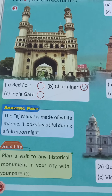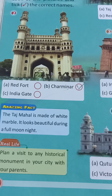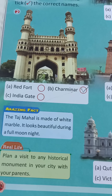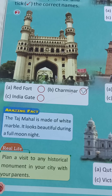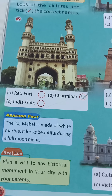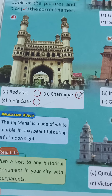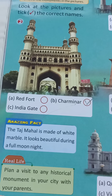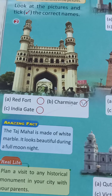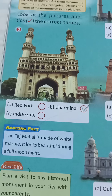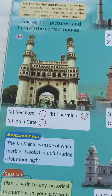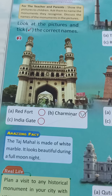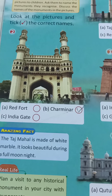These are the historical monuments. You should plan for it and visit with your parents. The Taj Mahal is made of white marble and it looks beautiful during a full moon light.